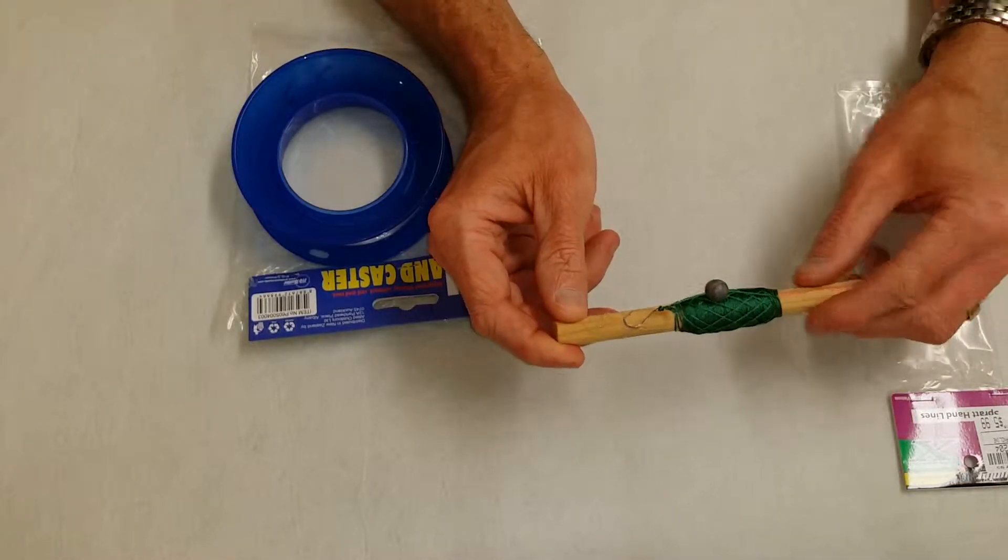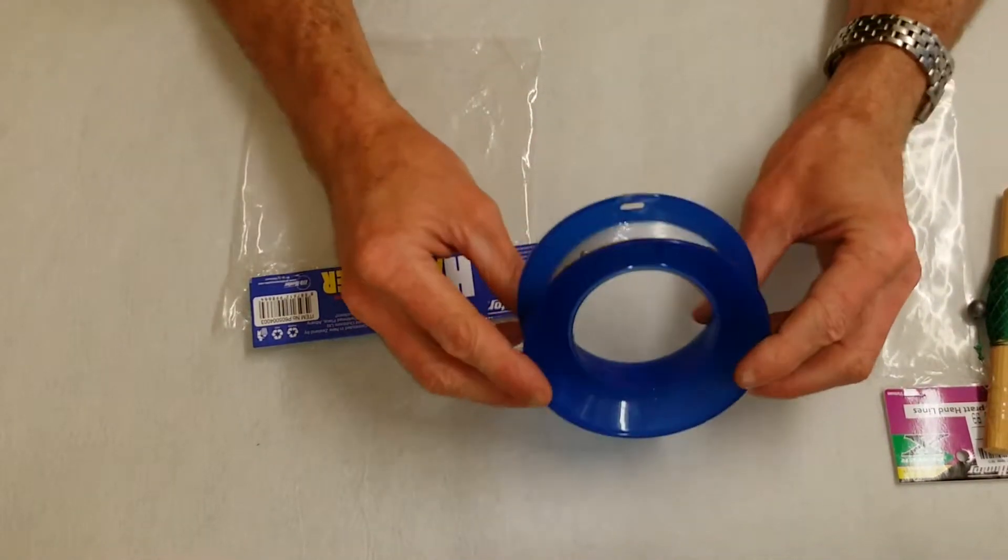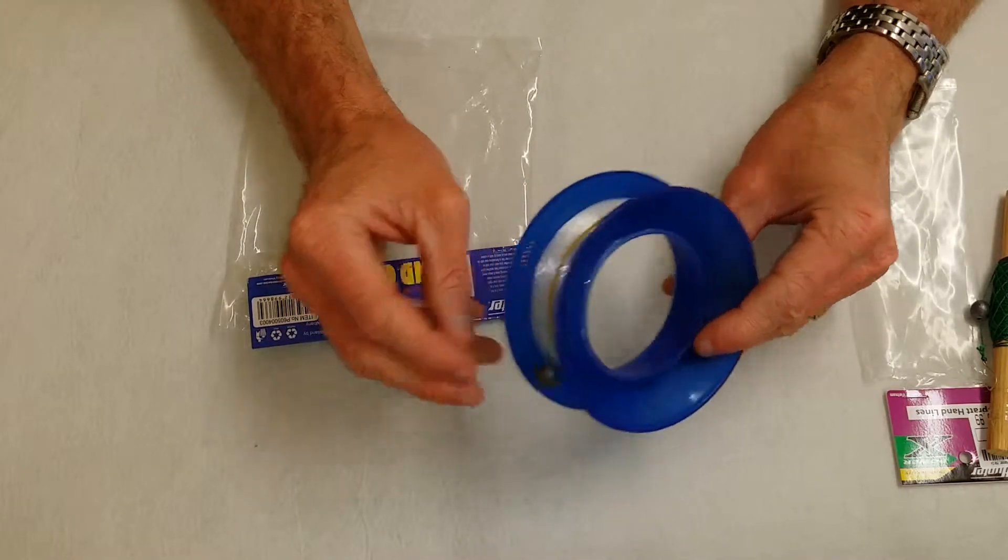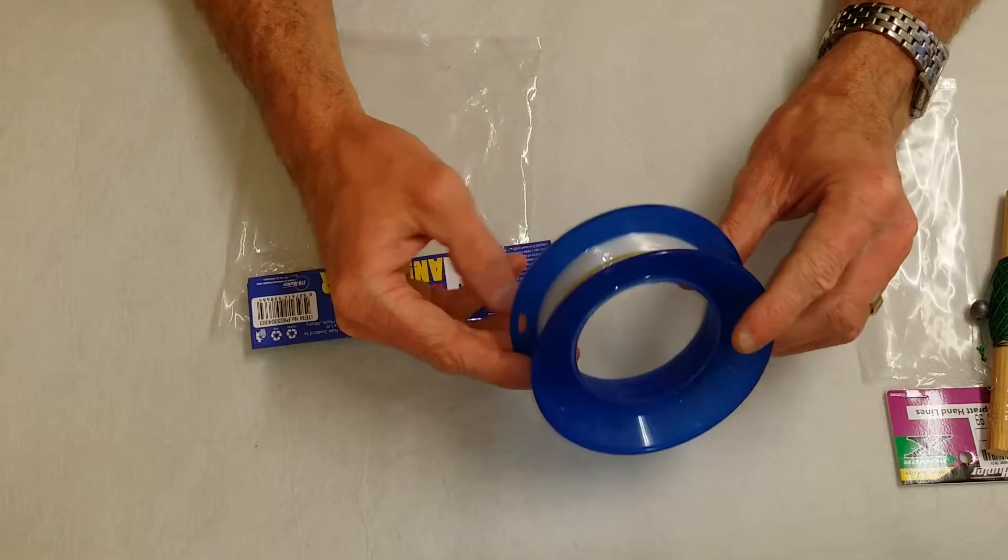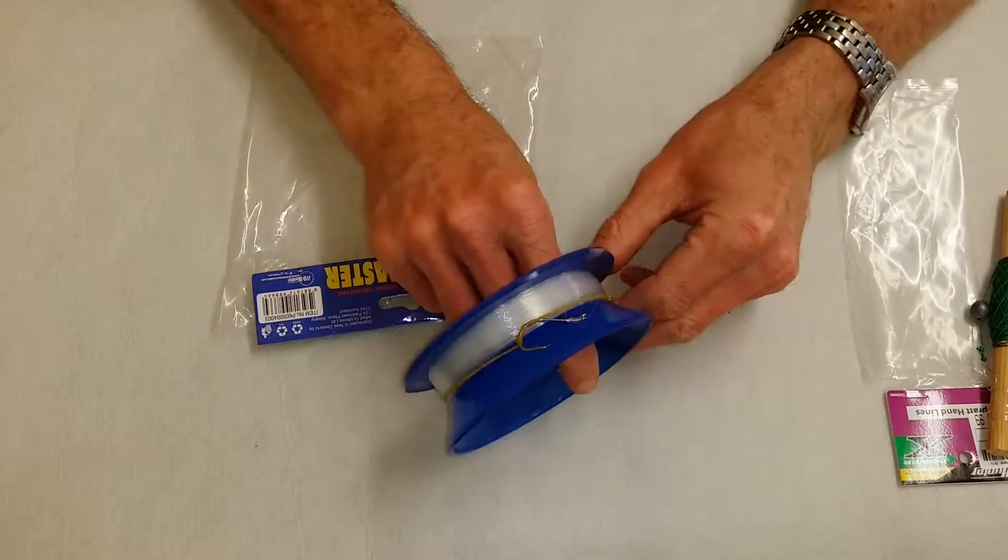Another option here is more of a spool setup. Again, it's quite cheap, I think this was about seven dollars. And you've got a small sinker and a hook.